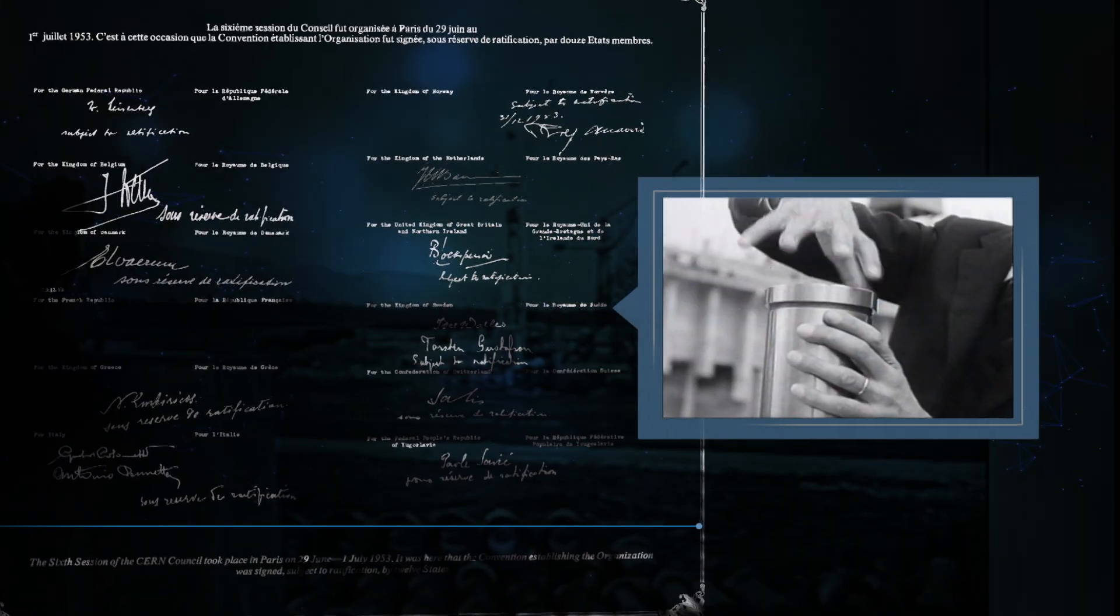In 1954, construction begins in the Geneva countryside, and the Convention is ratified by the 12 founding countries. The European Organization for Nuclear Research is created, but the acronym CERN remains.